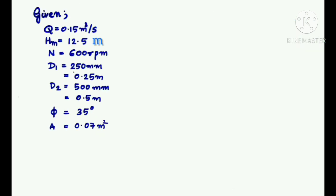First, let us write down the values given in the question. Given discharge Q = 0.15 m³/s, manometric head Hm = 12.5 m, speed of impeller N = 600 rpm, diameter at inlet = 0.25 m, diameter at outlet = 0.5 m, φ = 35 degrees, area of flow = 0.07 m².